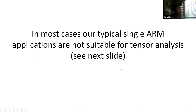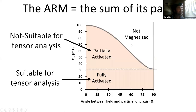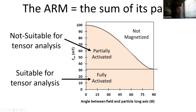What can we say? Partially activating ARMs can measure composite fabrics but are not suitable for tensor analysis. This composite fabric method can be tuned to specific coercivity windows. This particular lack of tensor suitability is independent of the linearity between the weak biasing field strength and the resultant magnetization, and in most cases our typical single ARM applications are not suitable for tensor analysis.